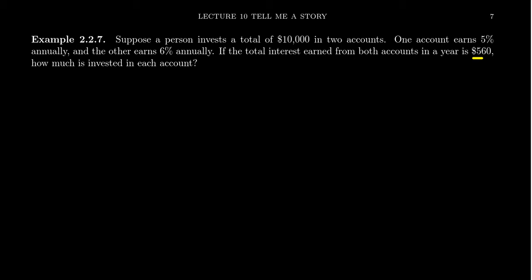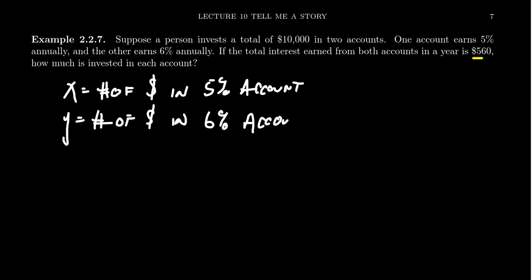So notice we actually have two unknowns in this situation. We have some X value, which we'll say is the number of dollars in the 5% account. And then we also have another variable Y, which is the number of dollars in the 6% account. We have two unknowns in this situation. This isn't something we've seen a lot in this series already, but we can handle this nonetheless.